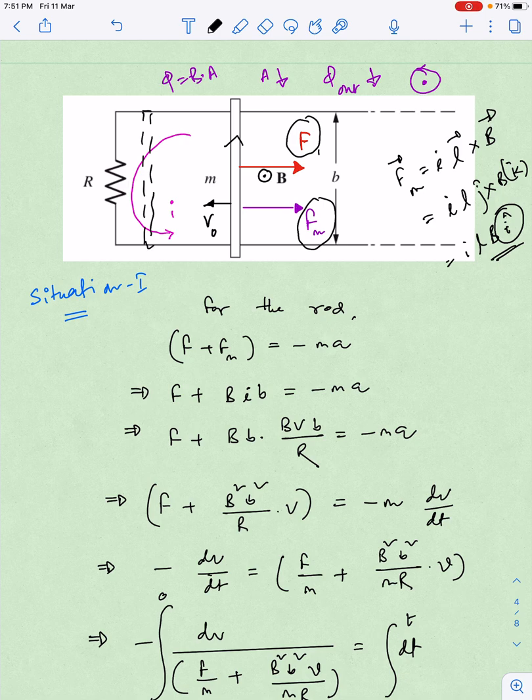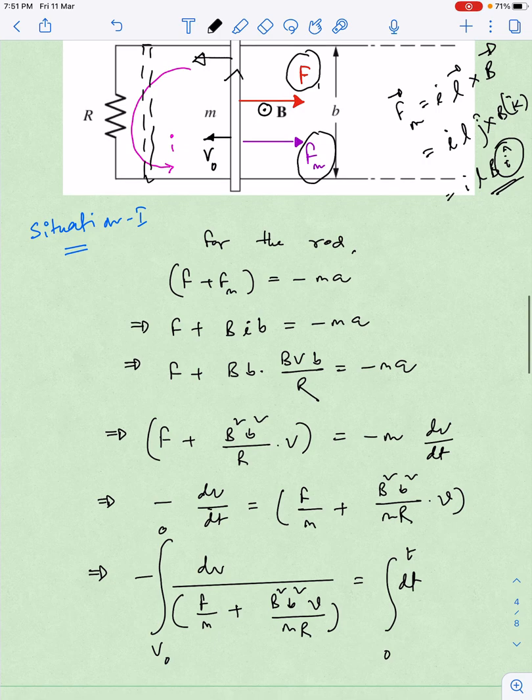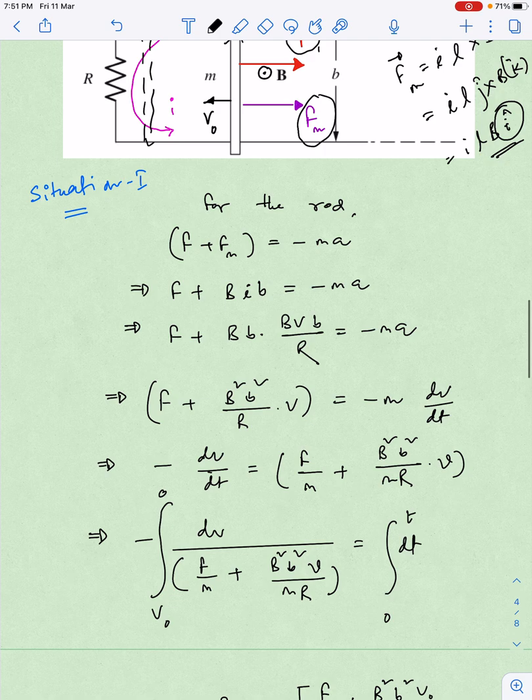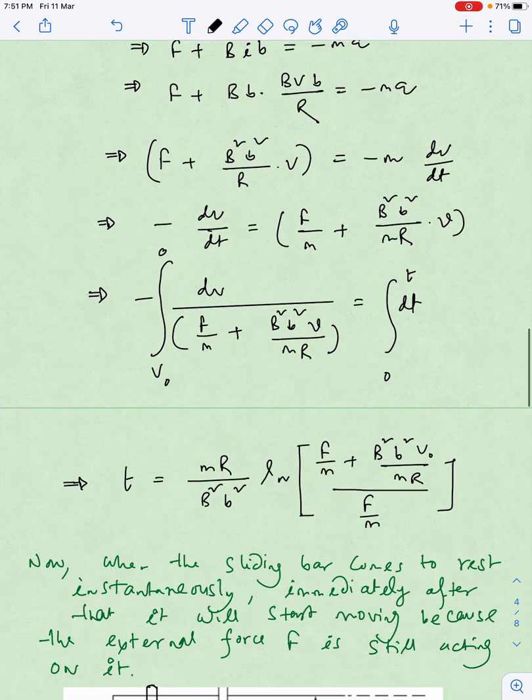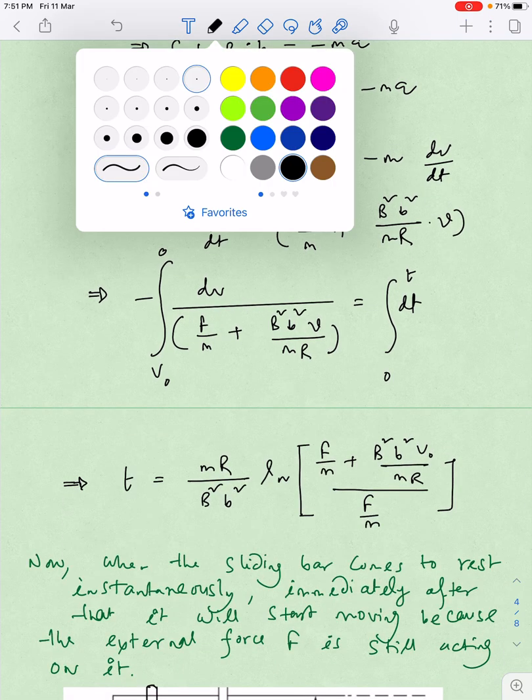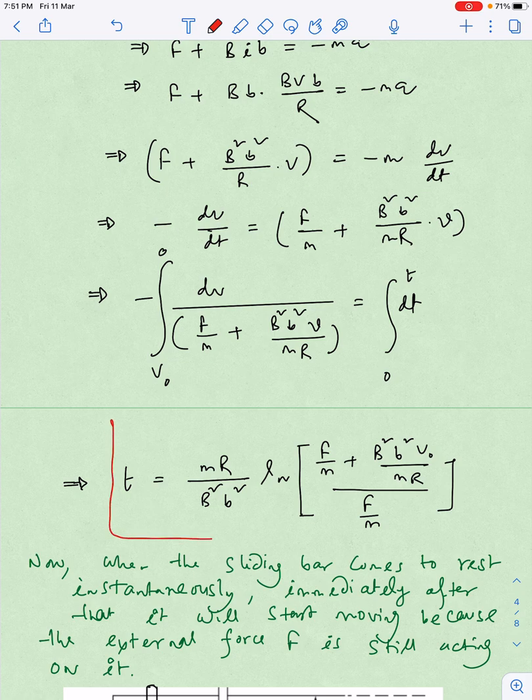Initially I'm going to discuss the motion of the rod from here to here, then I'll have the general discussion. I've written a simple equation: capital F external force plus F_m equals minus m into a. From there I've done this calculation. You can pause the screen and go through the calculation.